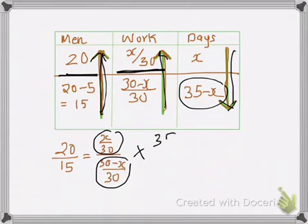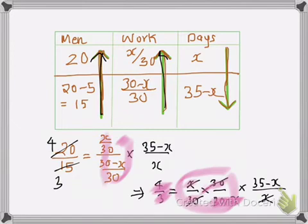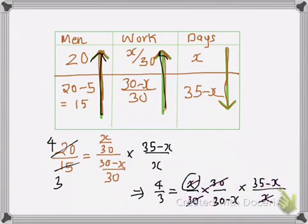So at first we have to write 35 minus x in numerator and x in denominator. So on simplification we get 4/3, which is 20/15, is equal to (x/30) times, this 30 goes upward and it becomes 30 divided by (30-x).